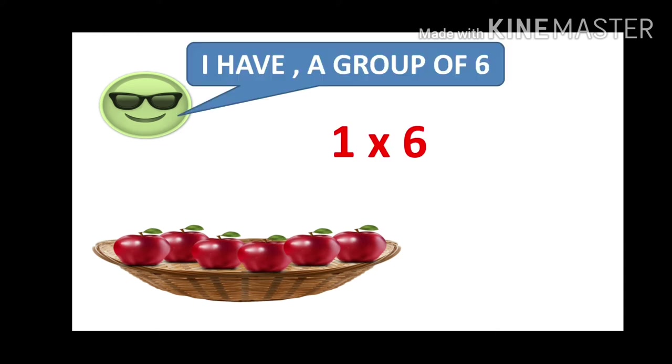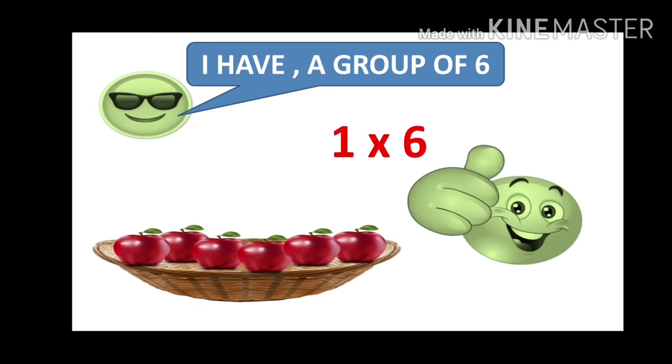We will start with roll number 1 and the 6 apples. As per his roll number, he has got 1 basket and that's a big one. So he starts filling it up one by one, and he has filled up the basket with all 6 apples. He has got 1 basket, so he has a group of 6. That means he has 1 group of 6 apples — in 1 basket, all 6 apples are filled.